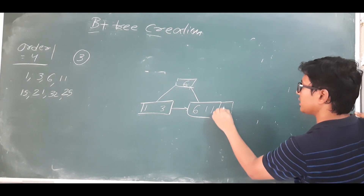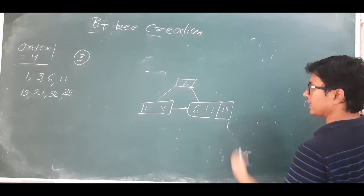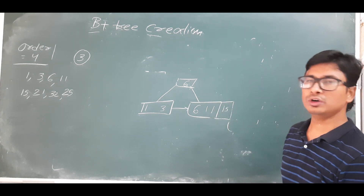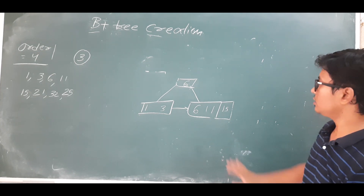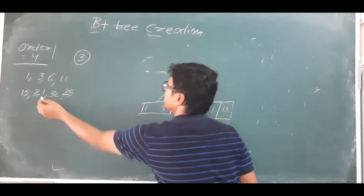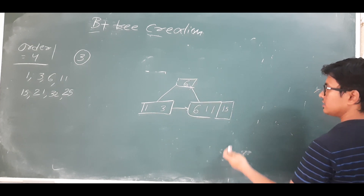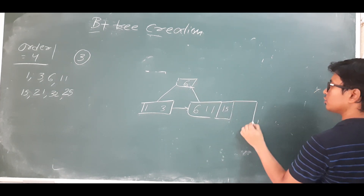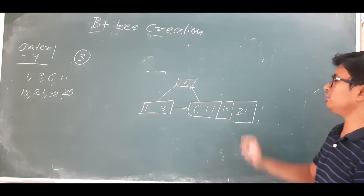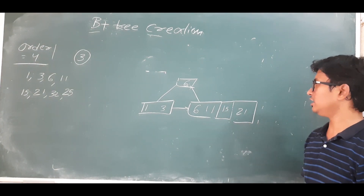Now I want to insert 15. Where will 15 come? 15 is greater than 6 and greater than 11, so 15 will come in the right leaf node — no overflow. Now I want to insert 21. 21 is greater than 6, greater than 15, so 21 will come here. If I insert 21 then it is in overflow.